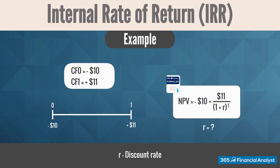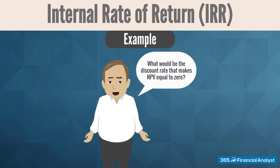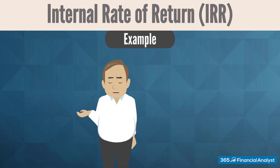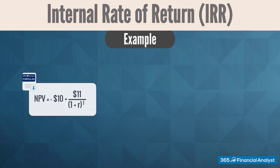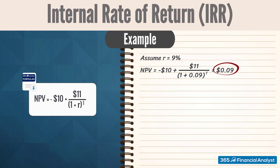Now, suppose we don't know R in advance. What would be the discount rate that makes NPV equal to zero? In other words, what is the internal rate of return for this investment opportunity? Let's begin by picking a random discount rate of 9%, which yields the following result. As we can see, the result for NPV is positive, so we need to pick a higher discount rate.